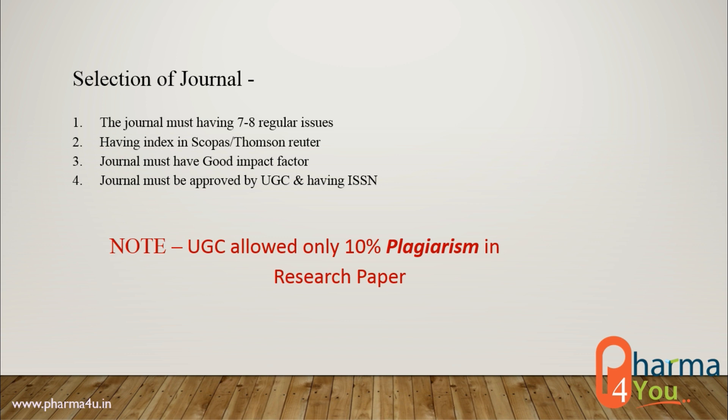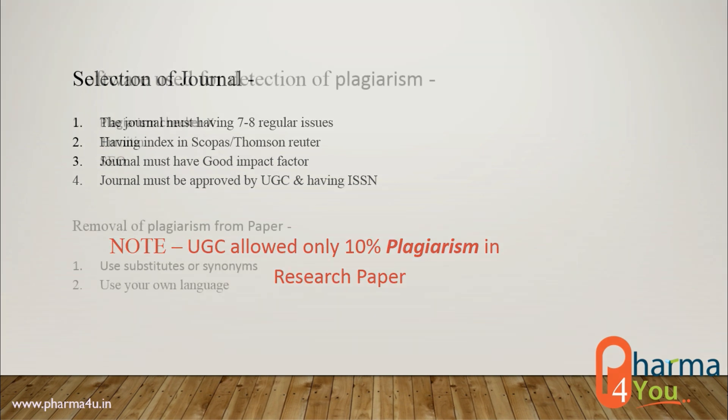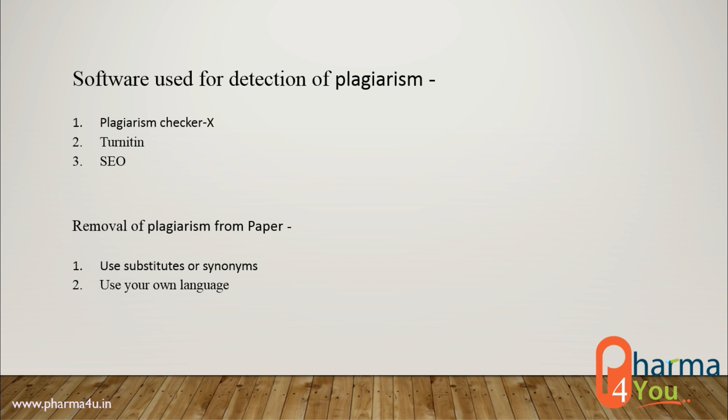Number four, the journal must be approved by UGC and must have an ISSN. Note: in your research article only 10% plagiarism is allowed. There are some software tools used by article publishers to detect plagiarism, such as Plagiarism Checker X, Turnitin, and iThenticate. If plagiarism is detected at more than 10%, your article is rejected.